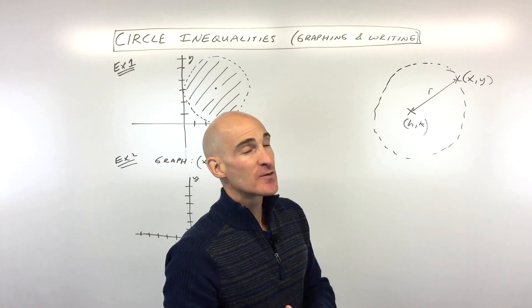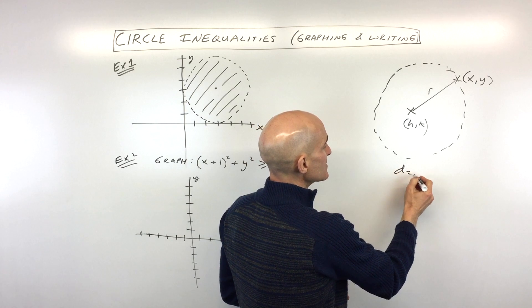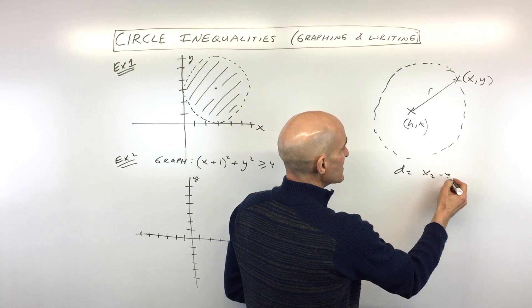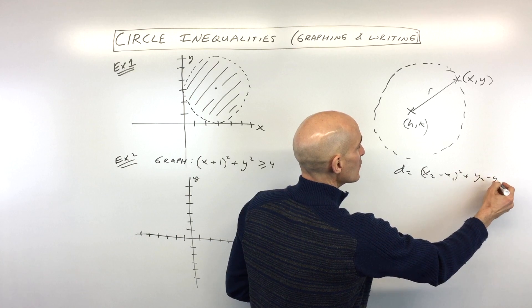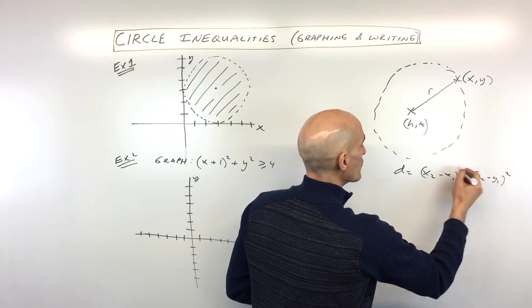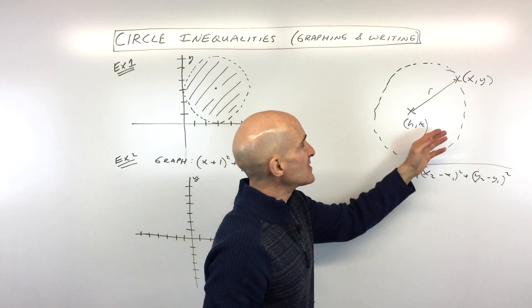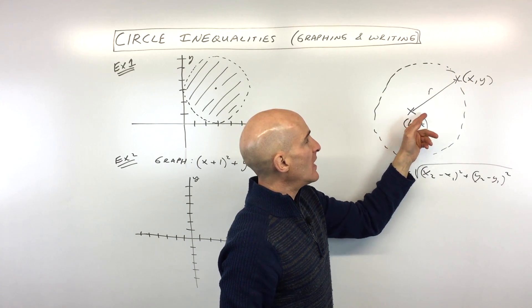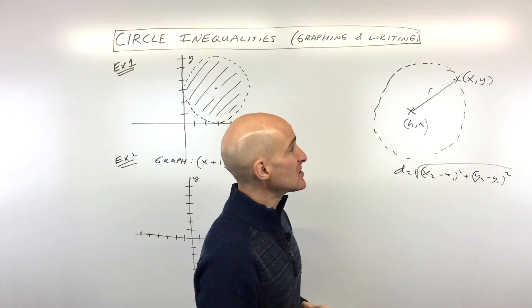So now if you remember the distance formula, remember how the distance formula is like this, it's x2 minus x1 squared plus y2 minus y1 squared, and then we take the square root. Well, in this case, our two points are going to be these two points here, we're going to find that distance between them.